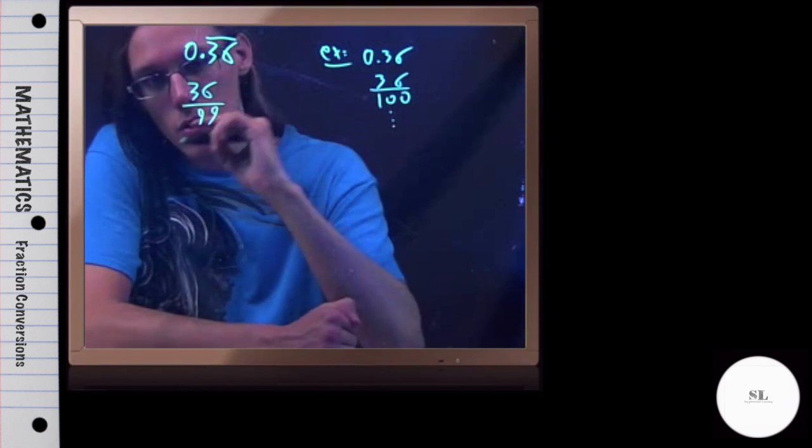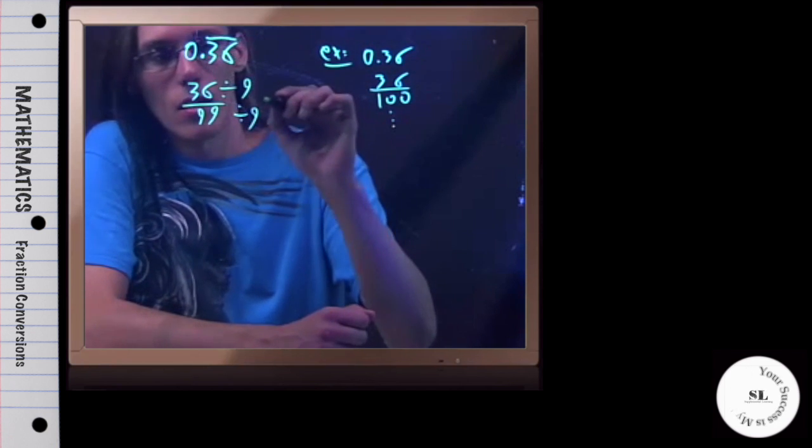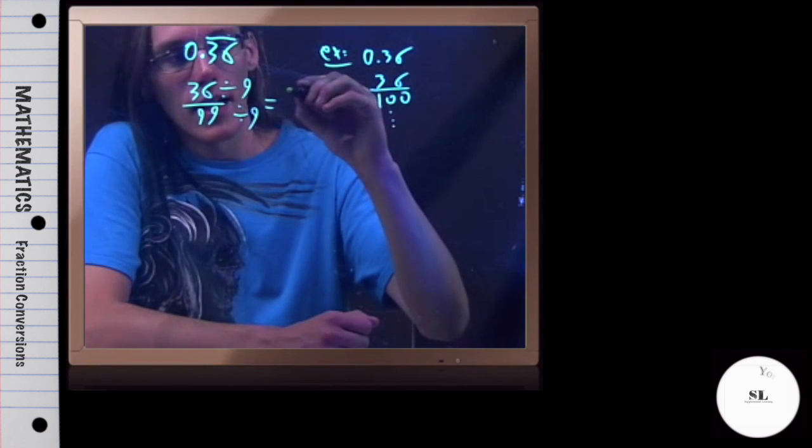Now we just need to reduce this. So I do notice that it's divisible by 9 on the top and bottom. So if I do that, 36 divided by 9 is 4, 99 divided by 9 is 11.